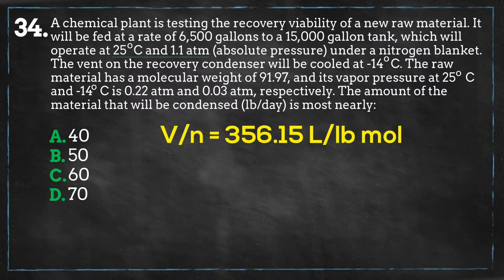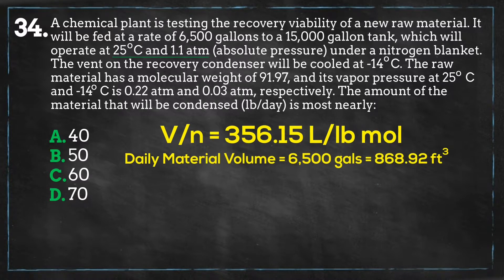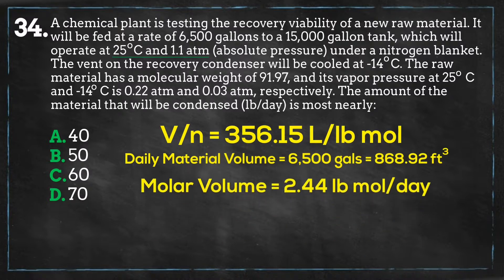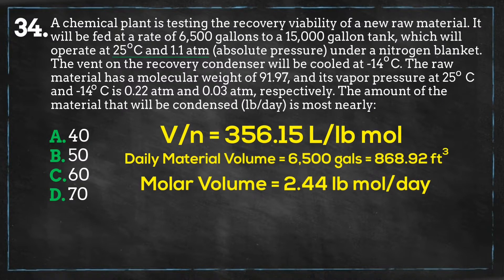We will convert our daily material volume of 6,500 gallons to cubic feet, which equals 868.92 cubic feet. Then divide this by the volume consumed by 1 pound-mole of material in the tank, and we get 2.44 pound-moles of material we are dealing with in the tank.